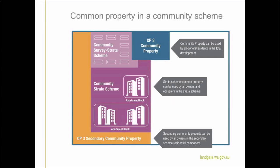The Act introducing community schemes will clearly set out that community property can be used by all the owners within the community scheme and is maintained by the community corporation using levies paid by the owners within that community scheme. Secondary community property can be used by all the owners within the secondary community scheme, which is a sub-scheme, and is maintained by the secondary community corporation using levies paid by the owners within that secondary community scheme. Common property can be used by all the owners within the community strata scheme, which is also a sub-scheme, and is maintained by the community strata company using levies paid by all the owners within that community strata scheme.